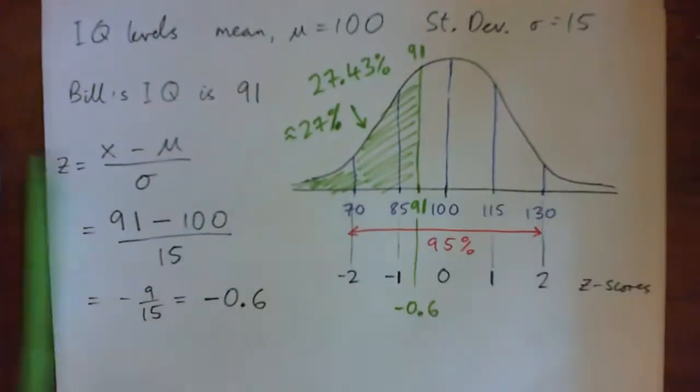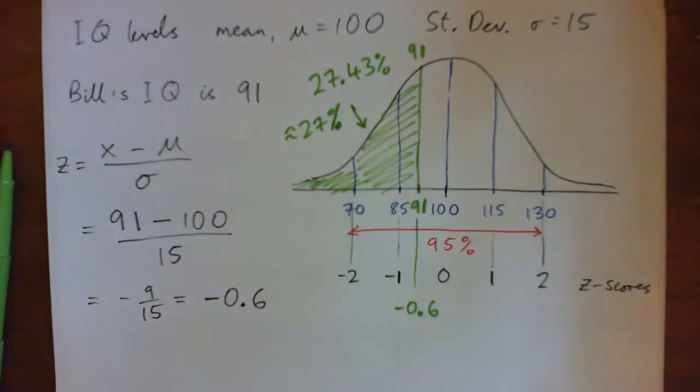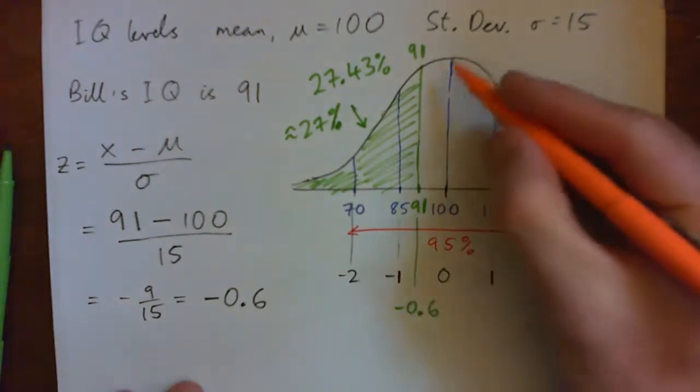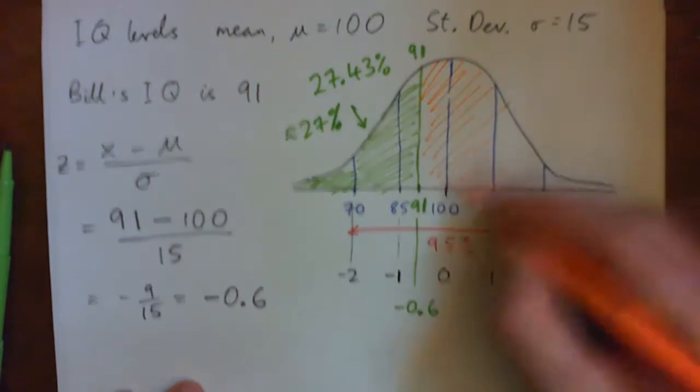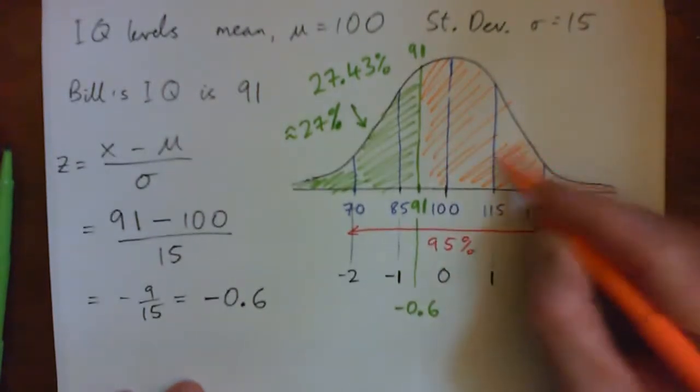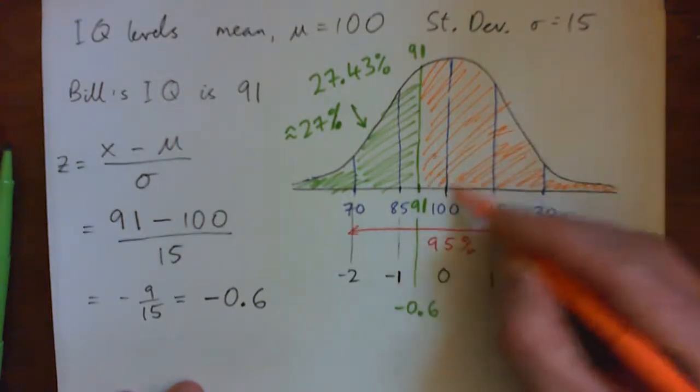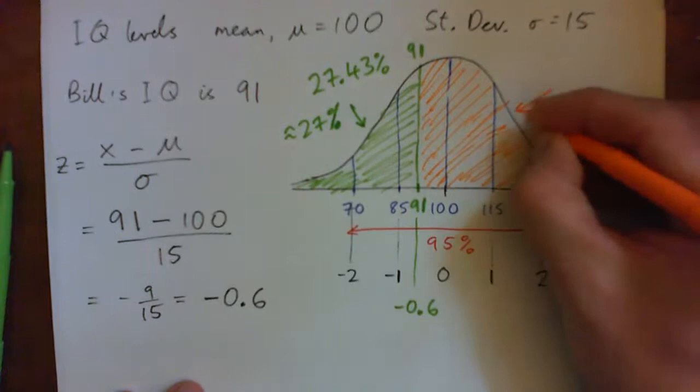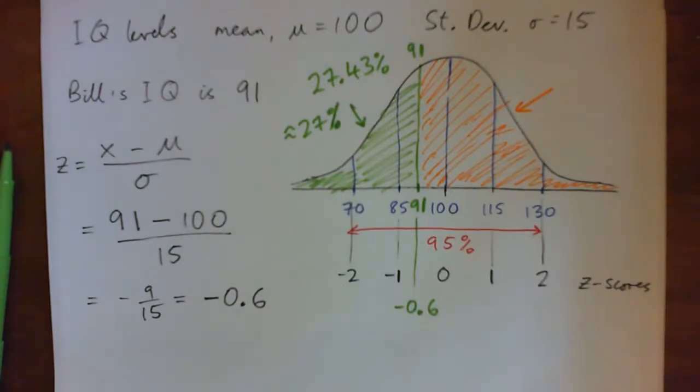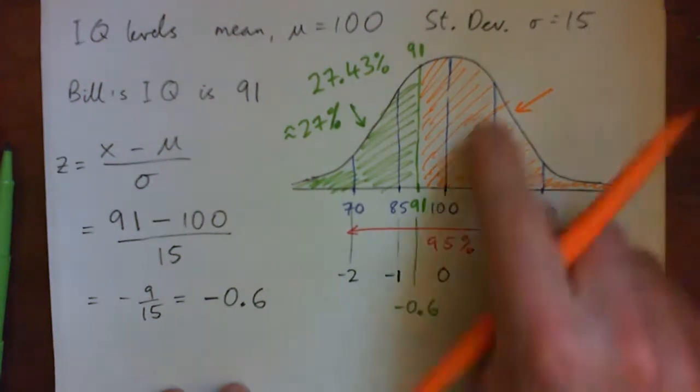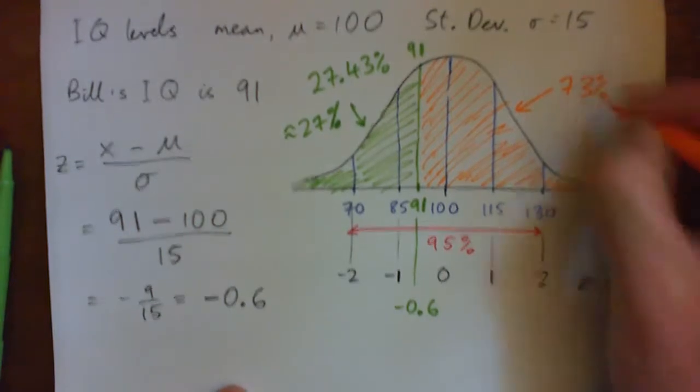Yeah. So therefore, let's all figure out his IQ score is less than what percent of the population because this area, this percent, are the percent of people that score above 91. So what percentage is that? And anyone watching from home, please press... That's like 73%? What's that? Yeah, exactly.